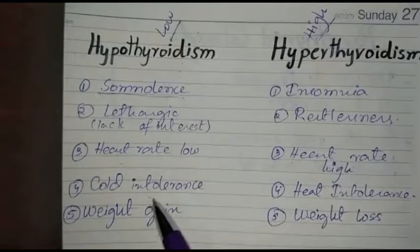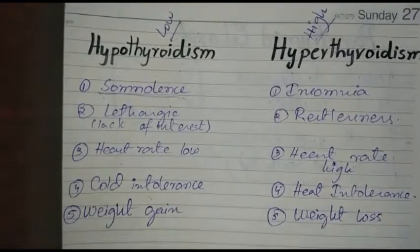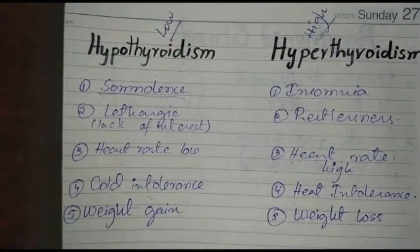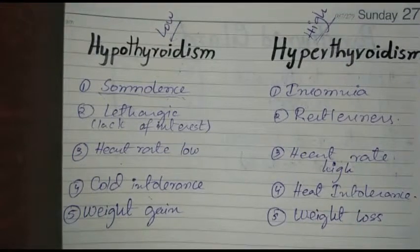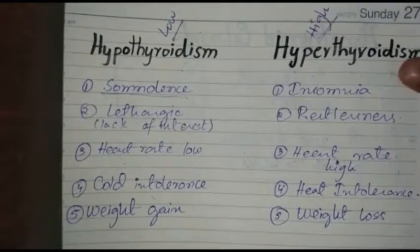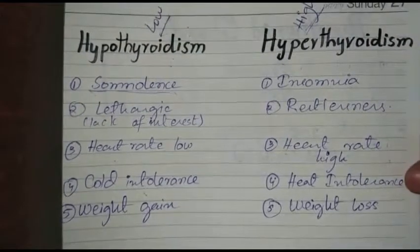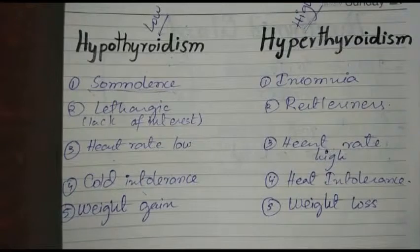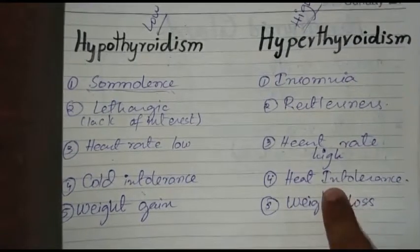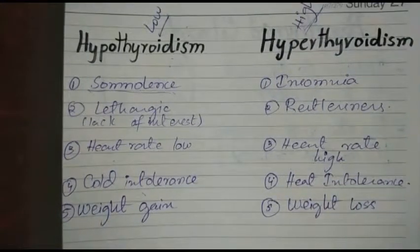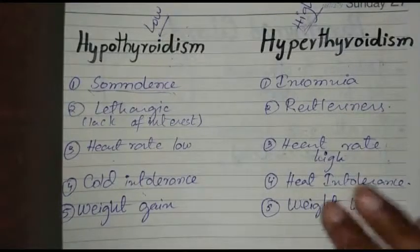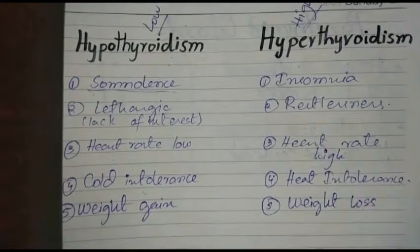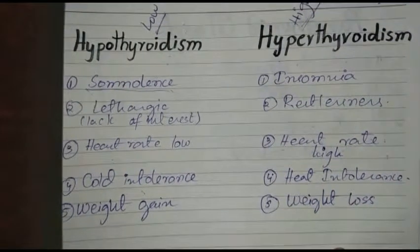In hypothyroidism, heat production is low, so cold intolerance is present. In hyperthyroidism, the basal metabolic rate increases and heat production is high, therefore heat intolerance is high.